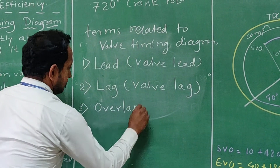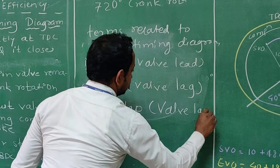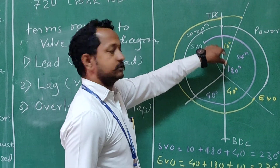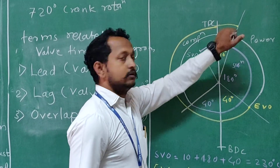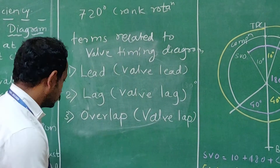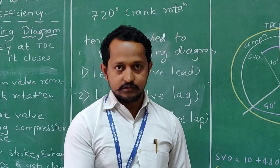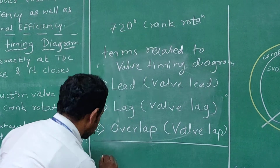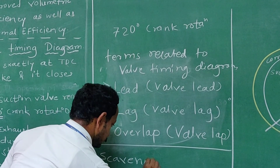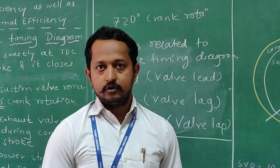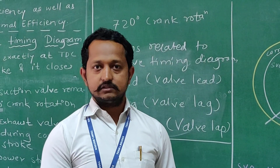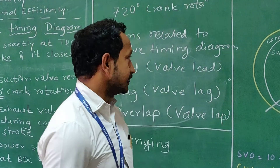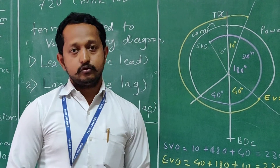And there is one more term: overlap, or simply called as valve overlap. Particularly crucial is this region — 10 degrees before TDC of suction valve opening and 10 degrees after TDC of exhaust valve closing. So this 20 degrees is nothing but valve overlap. Valve overlap is also having its significance. The last term related to this is scavenging. Scavenging is defined as removal of exhaust gas by the force of suction of fresh charge, or entry of fresh charge in a combustion chamber. That is done during this overlap period. Thank you to everyone.